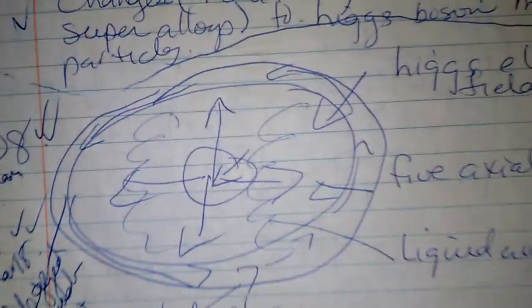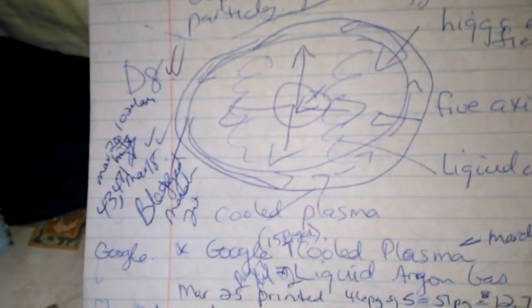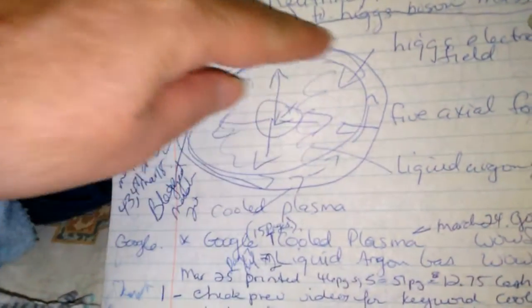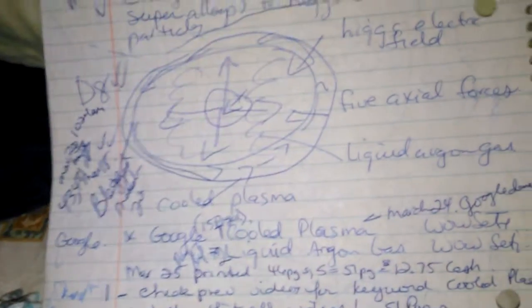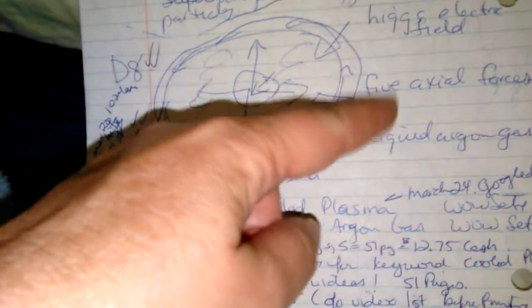This shows how a Higgs electric field will be generated from this engine. There's the five axial forces, and then it has within it a tubing system that goes around with liquid argon gas and cooled plasma, which can rotate clockwise or counterclockwise.